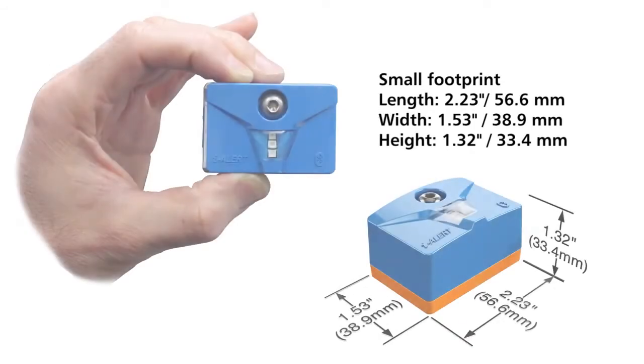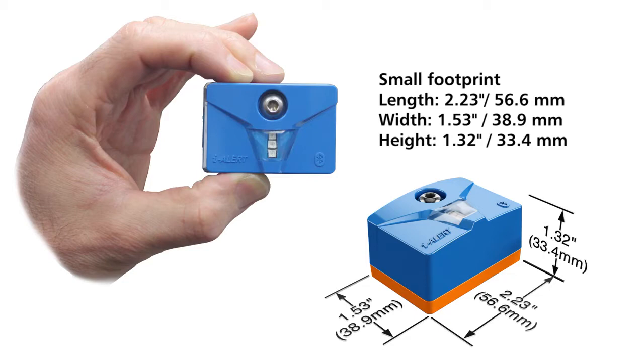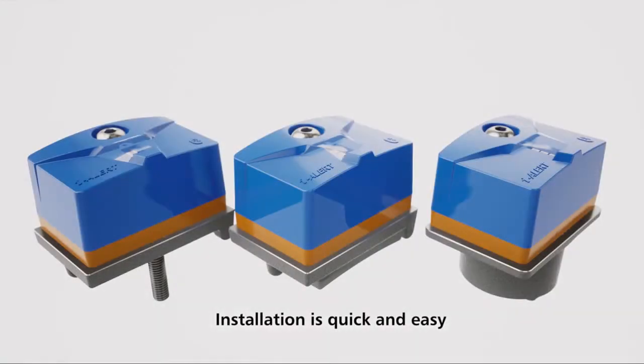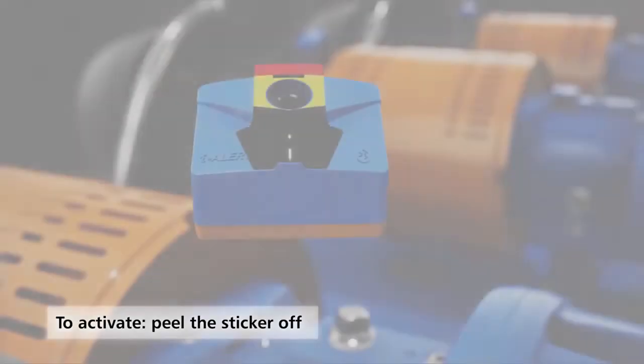The iAlert 2 device is the first condition monitor to successfully integrate these technologies into an industrial package, all within a small footprint. It's easy to install and use. Peel the yellow sticker off—when it senses light, the iAlert 2 is automatically activated.